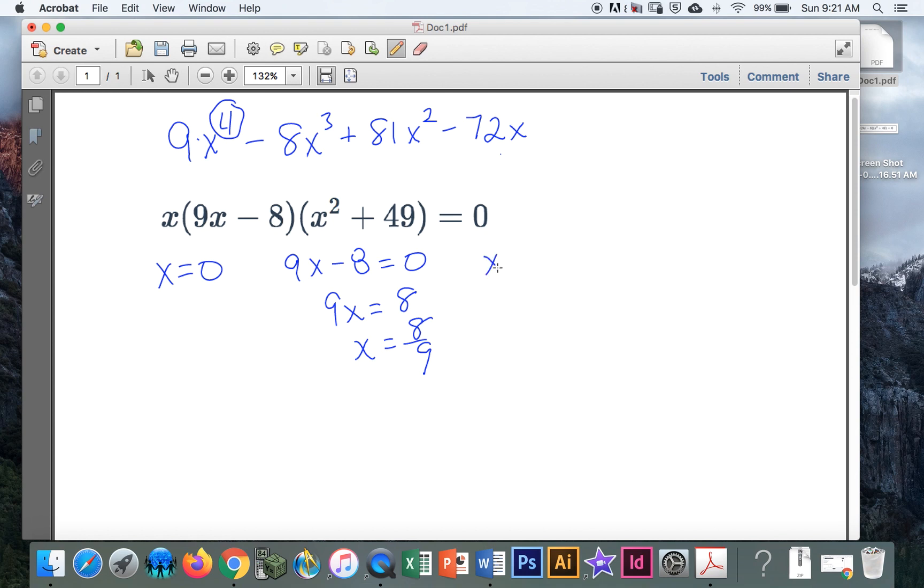Then take my third factor, set that equal to zero. Solve that. Next, square root of both sides. Square root of negative 49 is plus or minus 7i.